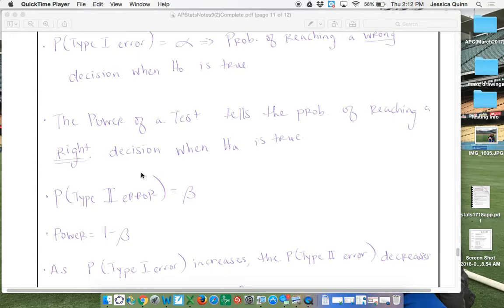So getting it right when the alternative is true. When our suspicion is true, what's the probability that we're going to get it right?